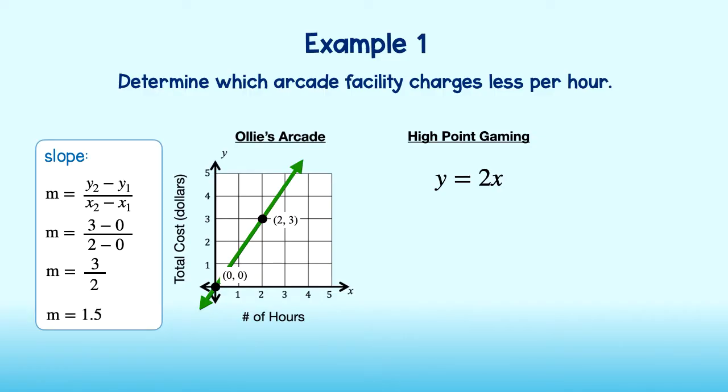The slope is 1.5, and since this is the unit rate, I can conclude that Ollie's Arcade charges $1.50 per hour. This number is also oftentimes referred to as the rate of change, or the constant rate of change since the rate, or slope, is constant.